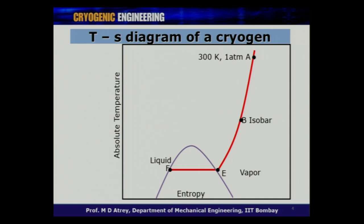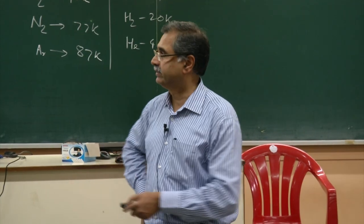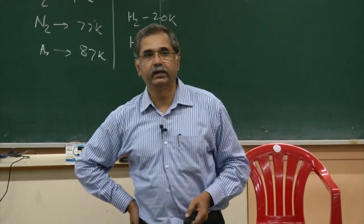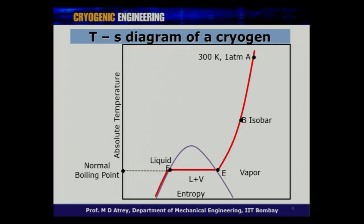The top of the dome is called the critical point — every gas has a critical point, critical pressure, and latent heat for a given pressure. This is called the normal boiling point; for nitrogen it is 77.4 Kelvin. This T-S diagram, which includes density, enthalpy, and all related data, is what every cryogenic engineer must use.